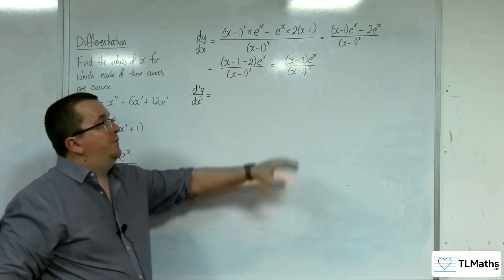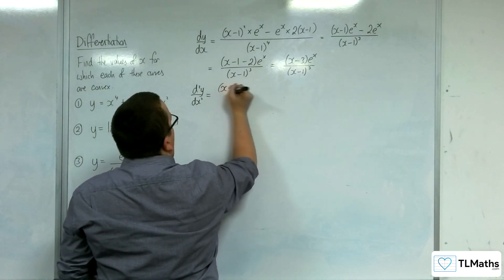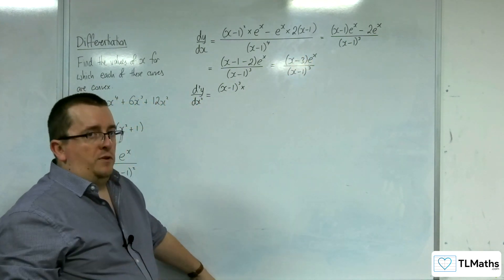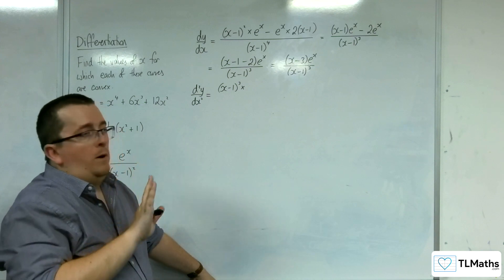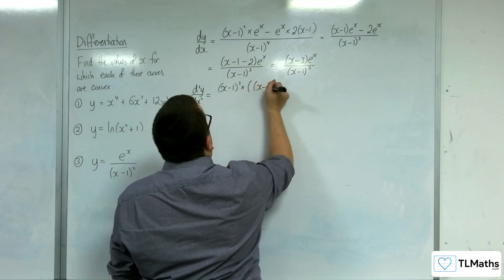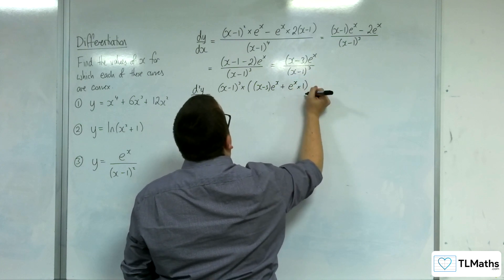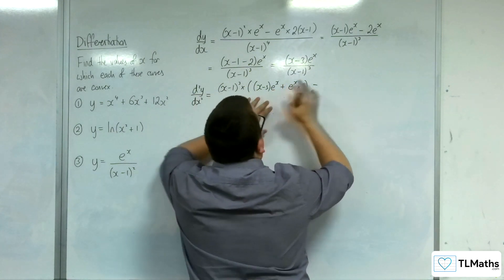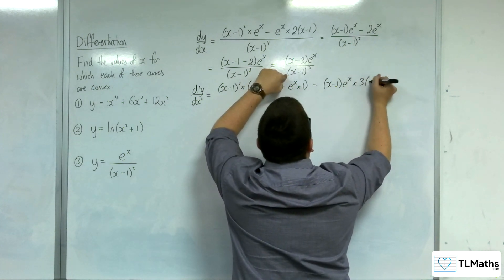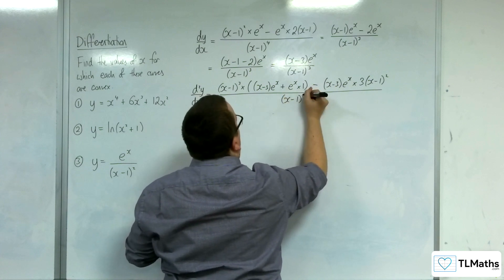For the second derivative, I need to differentiate (x − 3)eˣ / (x − 1)³ again using the quotient rule. The bottom (x − 1)³ times the derivative of the top — using the product rule: the first times the derivative of the second, plus the second times the derivative of the first, giving (x − 3)eˣ + eˣ. Take away the top times the derivative of the bottom, differentiating (x − 1)³ by chain rule gives 3(x − 1)², all over (x − 1) to the 6.